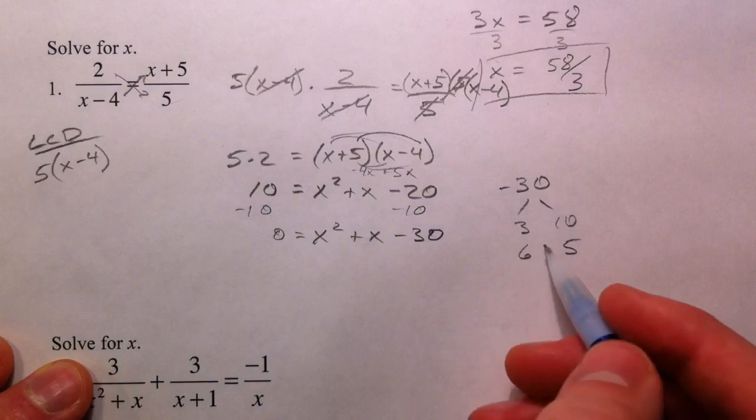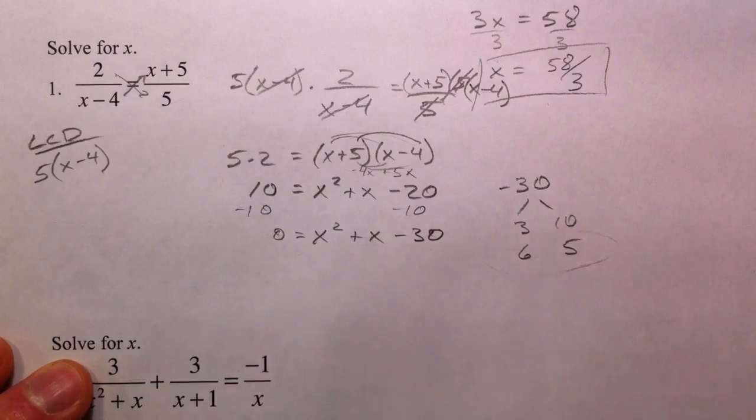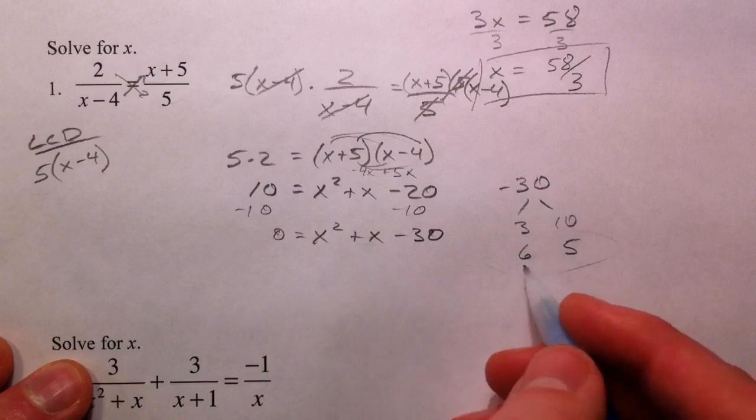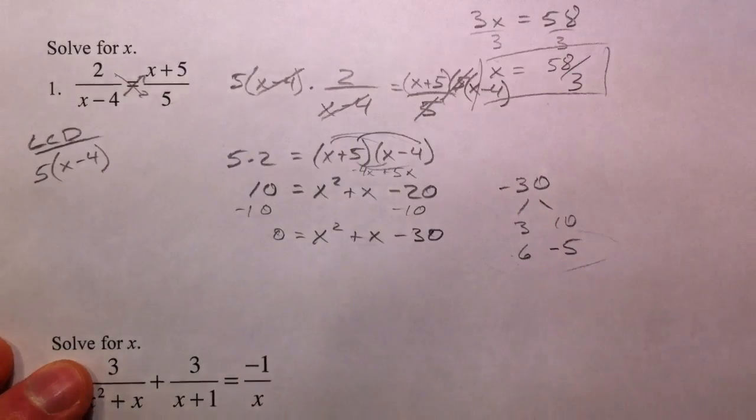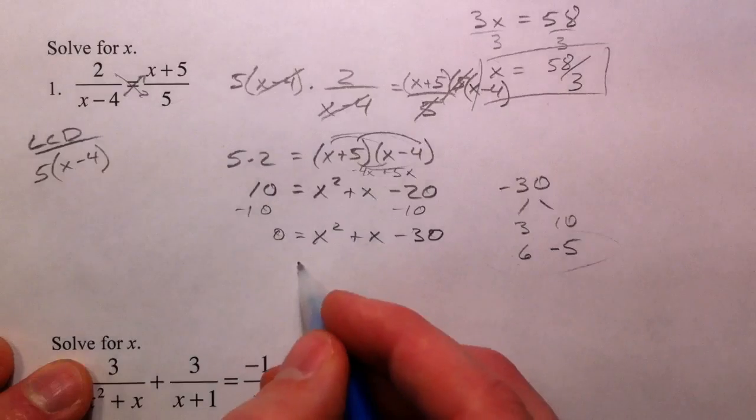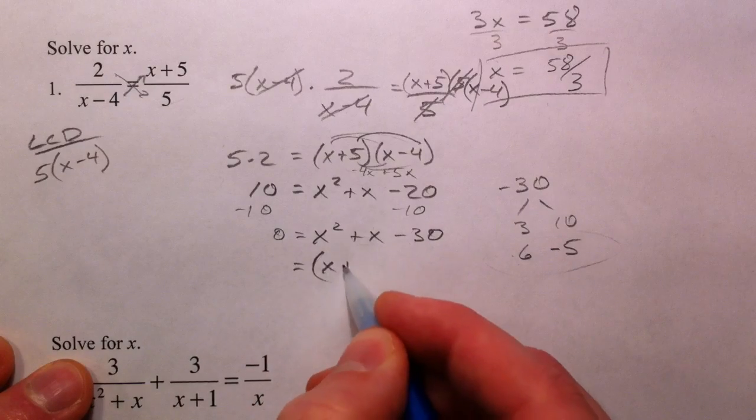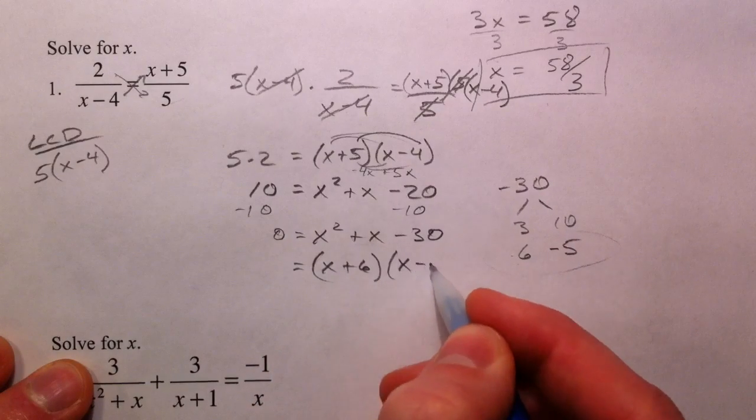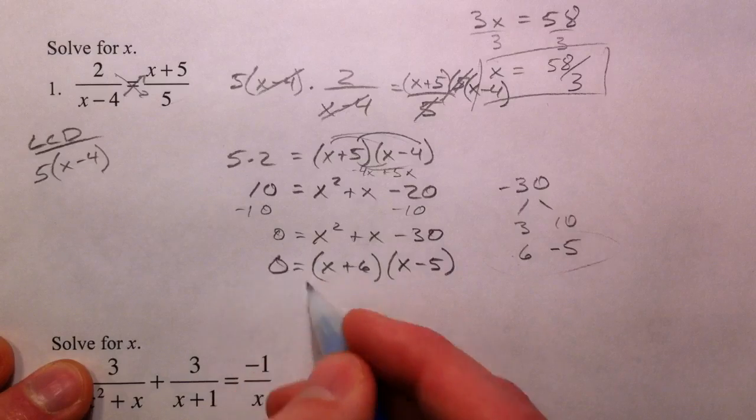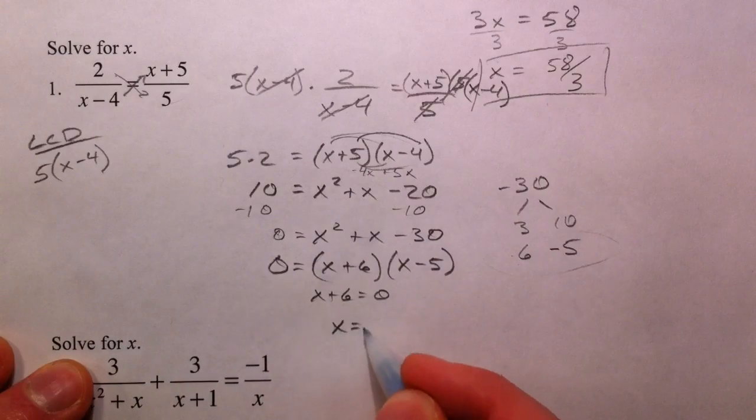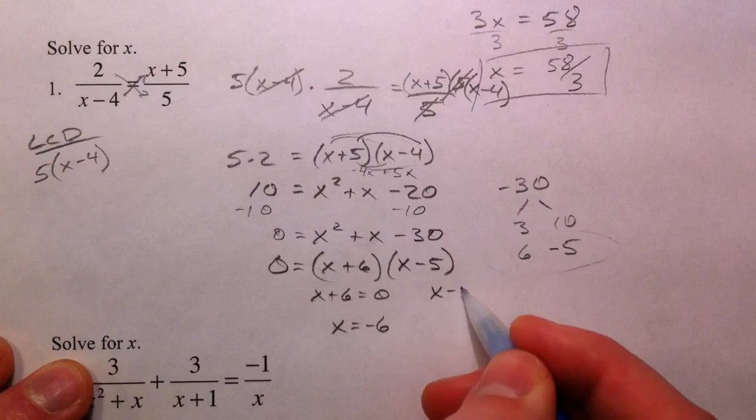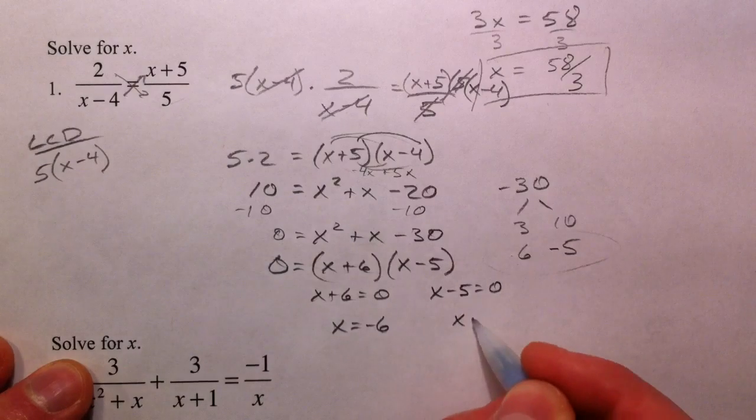They've got to be different by 1, and so the 6 and 5 is the jackpot. We've got to make the 6 positive and the 5 negative because 6 minus 5 is a positive 1, but they multiply to negative 30. So we get x plus 6, x minus 5. x plus 6 equals 0 so x equals negative 6, or x minus 5 equals 0, x equals 5. And there you have it.